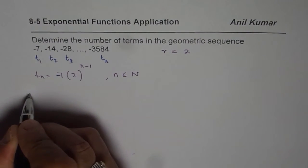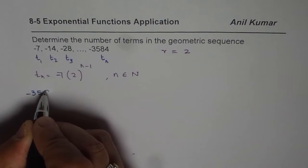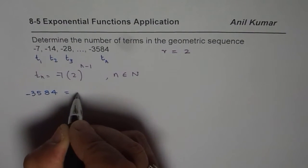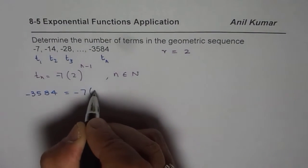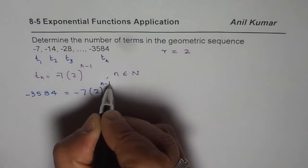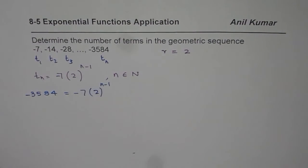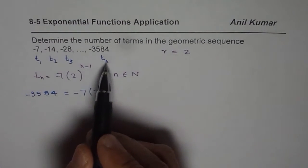The nth term is minus 3584. So we can write here minus 3584 equals minus 7 times 2 to the power of n minus 1. Now we need to find what n is. So we get our nth term.